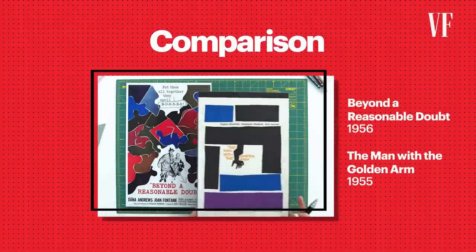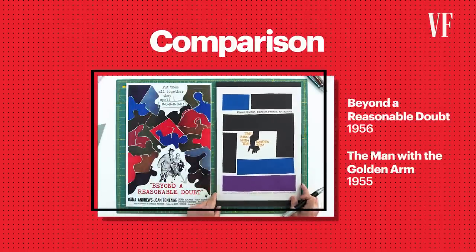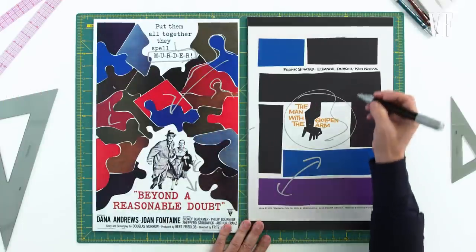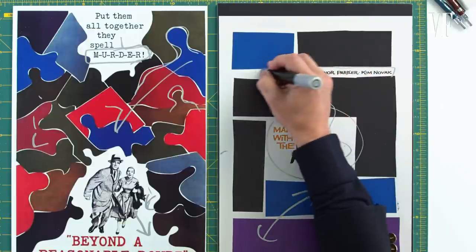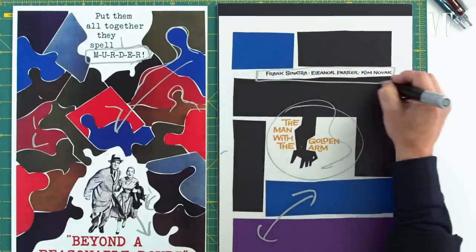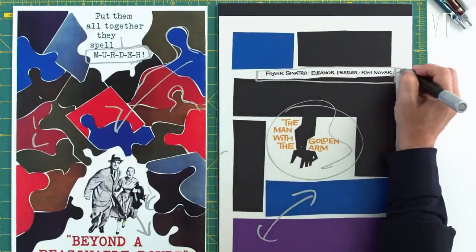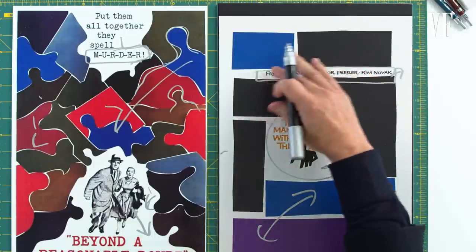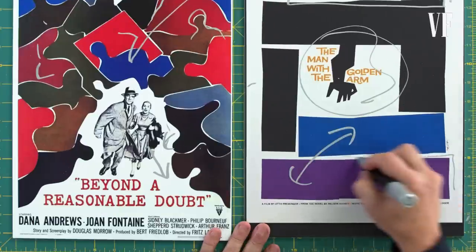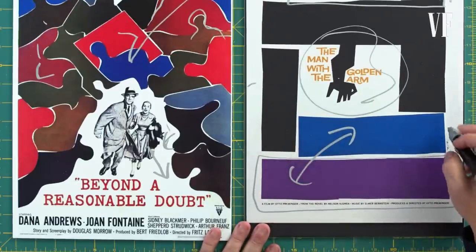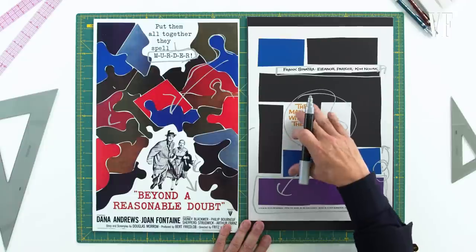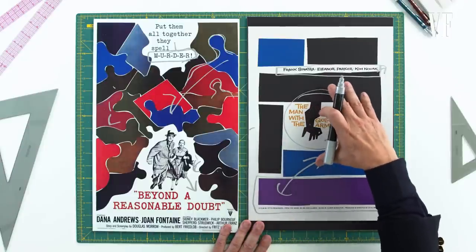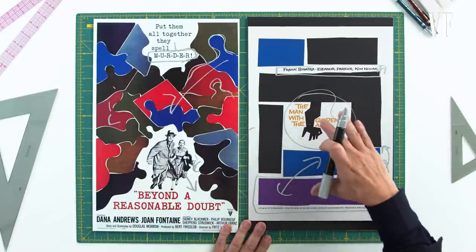Let's look at Saul Bass's poster for The Man with the Golden Arm. As you can see, the color palettes are very similar. You have this hand-drawn type. There's a font called the Saul Bass font now that incorporates this 50s jagged type movement. You also have these panels which are creating a border central to the logo, using the language of graphic design to sell a story.